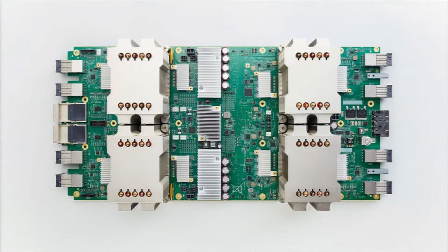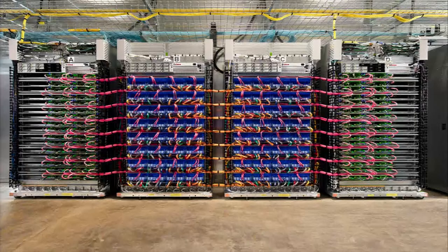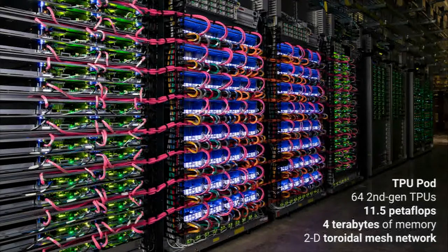At Google I/O this past year, we announced a second-generation TPU, designed from the ground up for both training and inference. Each one of these devices delivers up to 180 teraflops of floating-point performance with 64 gigabytes of ultra-high bandwidth memory. If you need more power — and deep learning researchers do — these are designed to be connected together into pods containing 64 of these second-generation TPUs, for a total of 11.5 petaflops theoretically applied to a single machine learning training problem. There are terabytes of memory and a mesh network connecting them together — a really exciting bespoke supercomputer for the world's largest-scale machine learning problems.